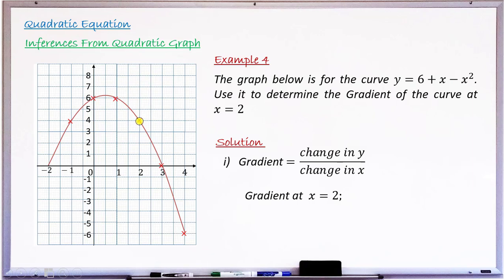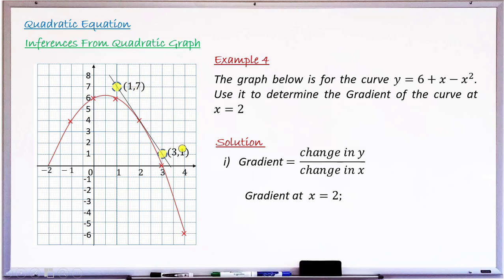Using a long ruler, draw the tangent at x = 2. On the tangent line, mark two points whose coordinates can be read exactly. Taking point 1: x = 1, y = 7. Taking point 2: x = 3, y = 1.